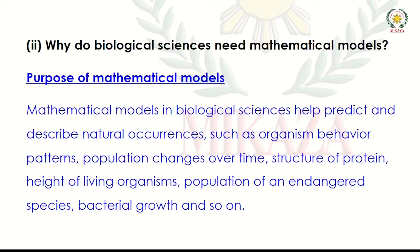If bacteria divide every two minutes and produce new organisms, we can find that a disease will be out of control. We can calculate how many years it will take for an endangered species to become extinct. This is why we use mathematical formulas in biological sciences — they help predict and describe natural occurrences.